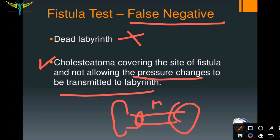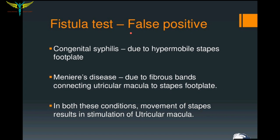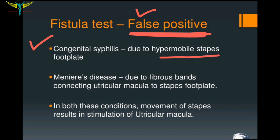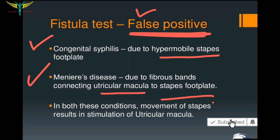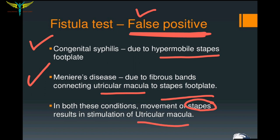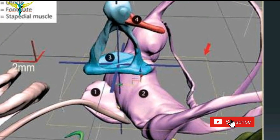The fistula test is false positive in cases of congenital syphilis, due to a hypermobile stapes footplate which causes mobility into the labyrinth. It is also false positive in Meniere's disease, due to fibrous bands connecting the utricular macula to the stapes footplate. In both conditions, movement of the stapes bone or footplate results in stimulation of the utricular macula, leading to stimulation of the labyrinth and a false positive fistula test.